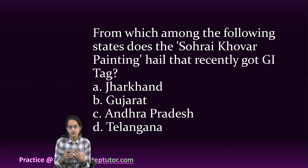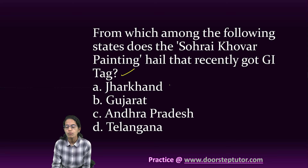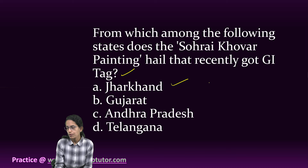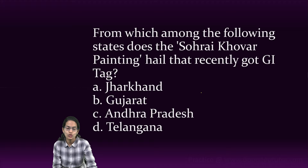The first question: from which state does the Sohari cover painting hail, which recently got a GI tag? Note this is from the contemporary section. This painting is from Jharkhand, known for its traditional and mural arts. The locally available soils of different colors in the Hazaribagh region of Jharkhand are used to create these paintings, depicting the rich cultural heritage of the region.